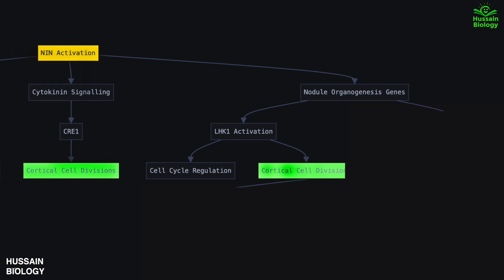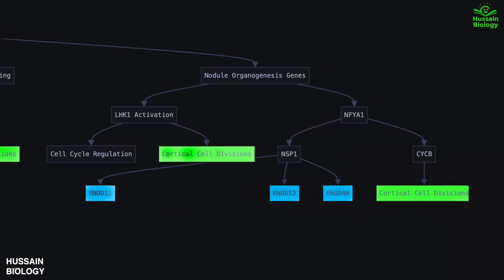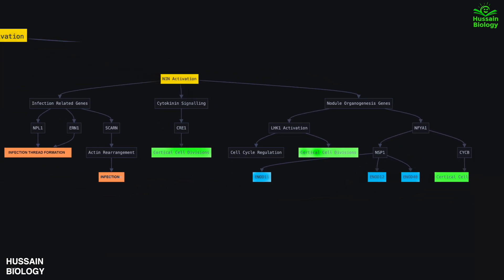Finally, NIN activates nodule organogenesis genes — it activates NFYA1, which then activates NSP1, which in turn activates ENOD11, ENOD12, and ENOD40. NFYA1 also activates CYCB, which helps in cell cycle divisions. So overall, NIN activates all genes needed for infection and nodulation.